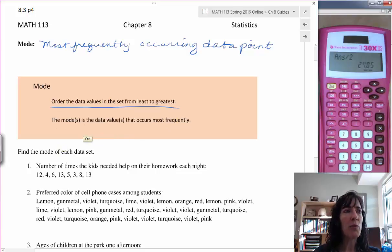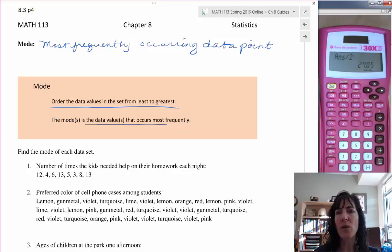And then you find the data value or values, sometimes you have more than one, that occur the most frequently. So if you find a three in your data set four times, and you find a four in your data set four times, you have two modes, three and a four.